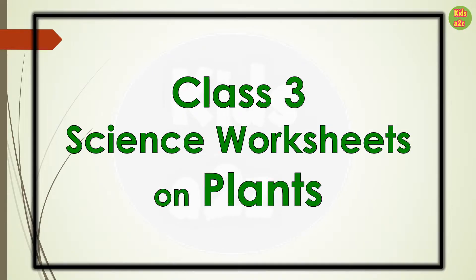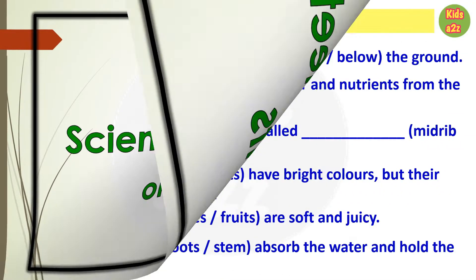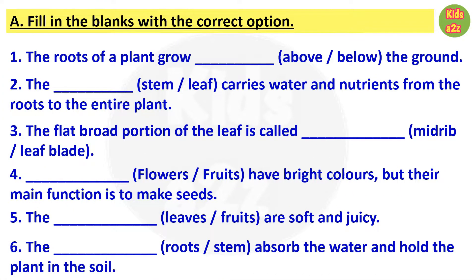Class 3 science worksheets on plants. Let us start the first worksheet with fill in the blanks. Kids need to fill the blanks with the correct word given in the brackets. Question one: the roots of a plant grow above or below the ground. The answer is below. Question two: the dash stem or leaf carries water and nutrients from the roots to the entire plant. The answer is stem.